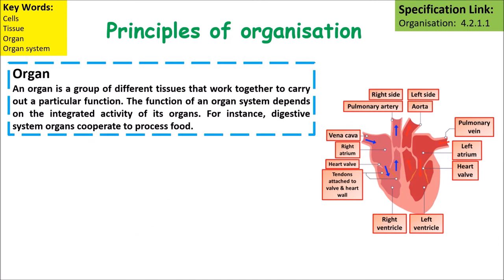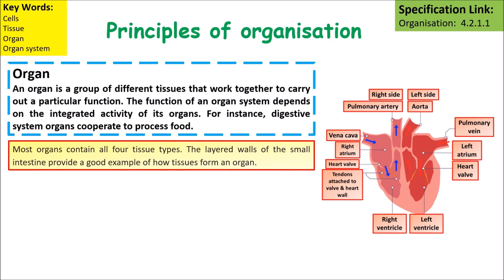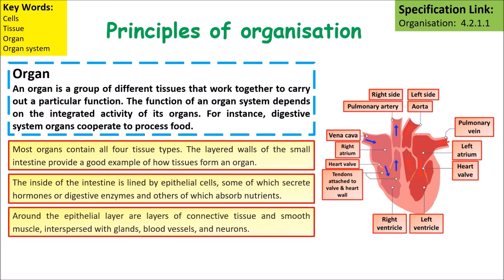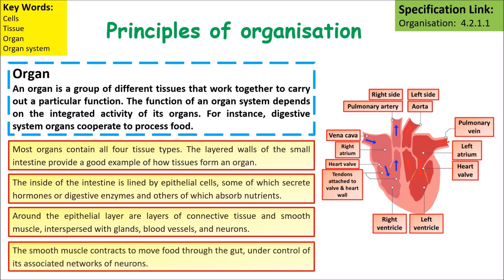An organ is a group of tissues that works together to carry out a particular function, and the function of an organ depends on the tissues it is made of. Most organs contain four types of tissue. A good example is the layered wall of the small intestine: the inside is lined with epithelial cells that secrete hormones or digestive enzymes and absorb nutrients. Around this are layers of connective tissue and smooth muscular tissue, interspersed with glands, blood vessels, and neurons. The smooth muscle contracts to move food through the intestines in a controlled way as determined by nervous impulses travelling down the neurons.